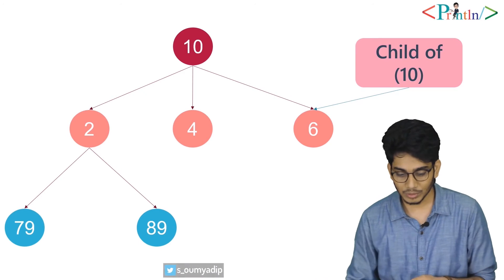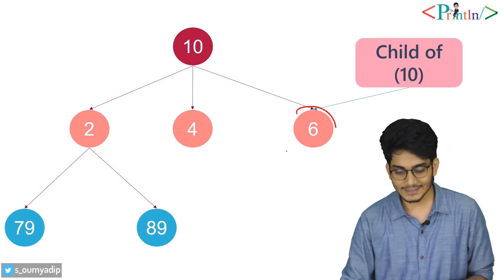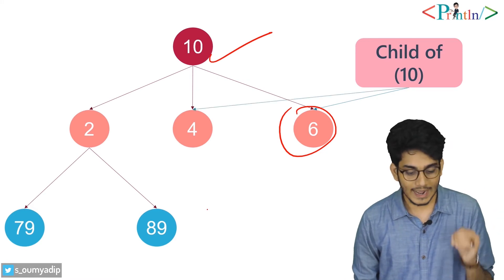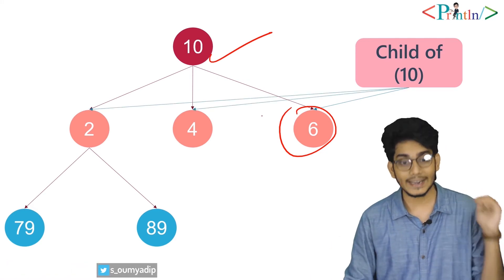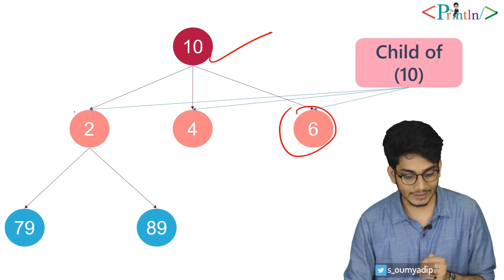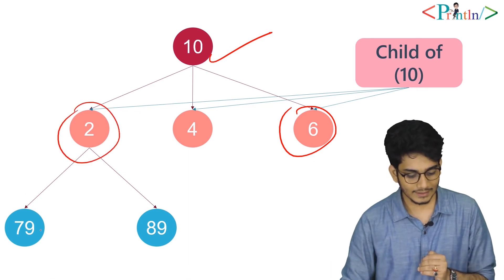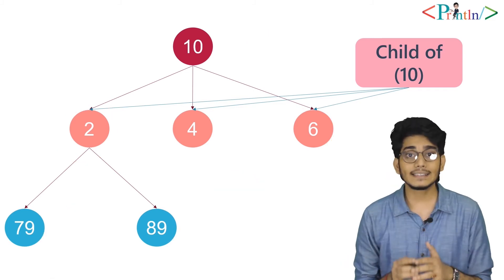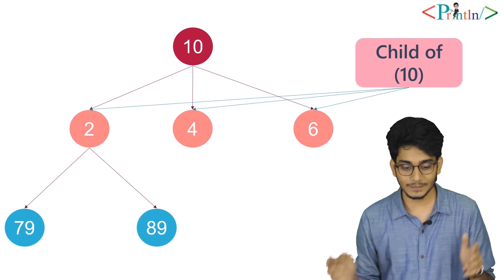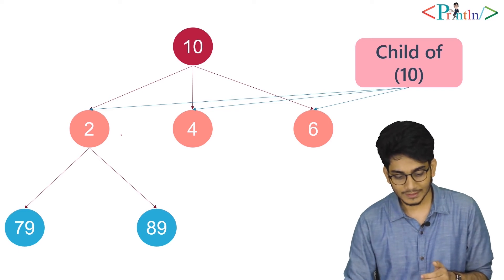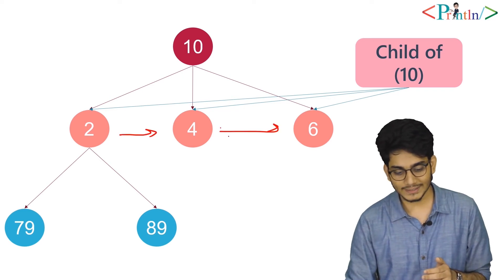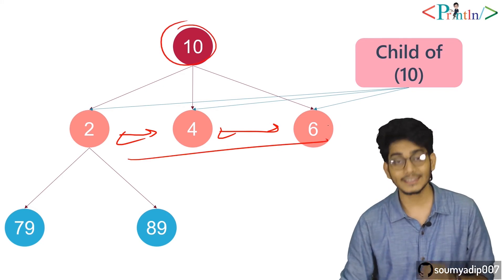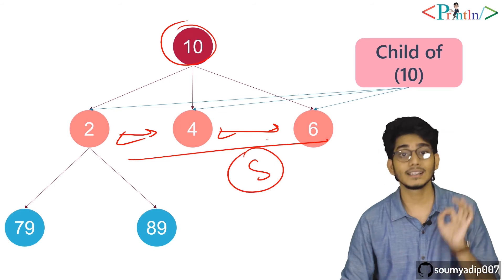Now we'll talk about child nodes. Node 6 is a child of 10, node 4 is also a child of 10, and node 2 is also a child of 10. Node 2 has two child nodes: 79 and 89. Now, siblings are nodes that share the same parent — so 2, 4, and 6 are siblings because they all have the same parent, 10.